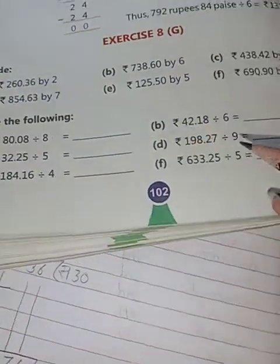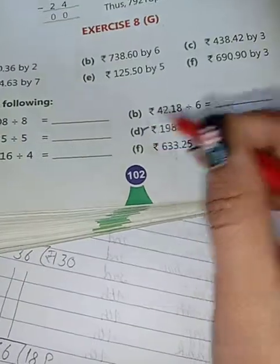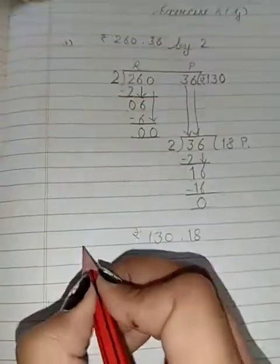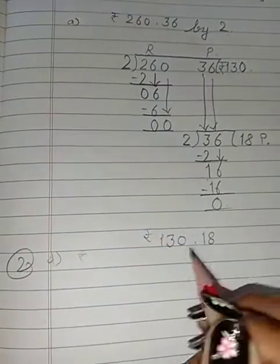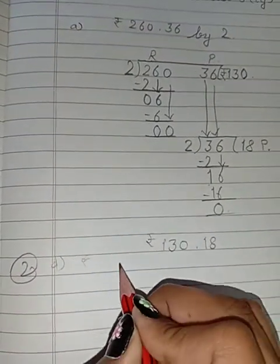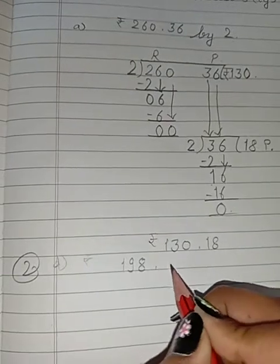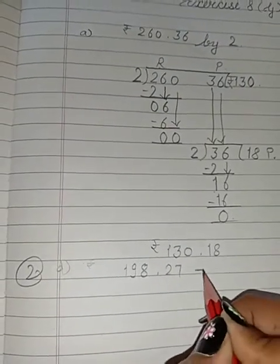This is how you solve sum number 1. We will solve sum number 2 which is part D. The statement is given in this way: second sum D part, 198 rupees 27 paise divided by 9.